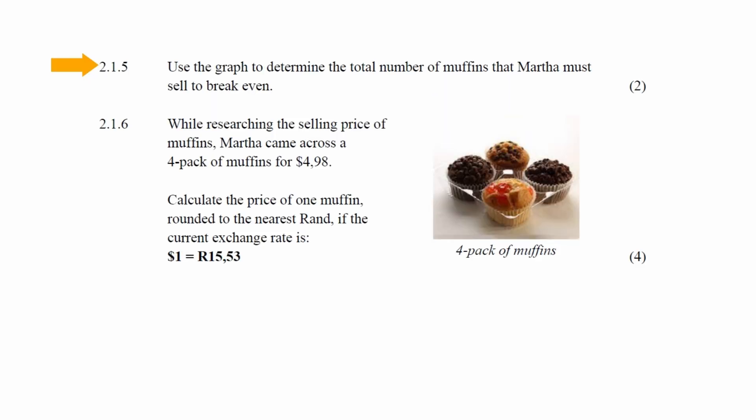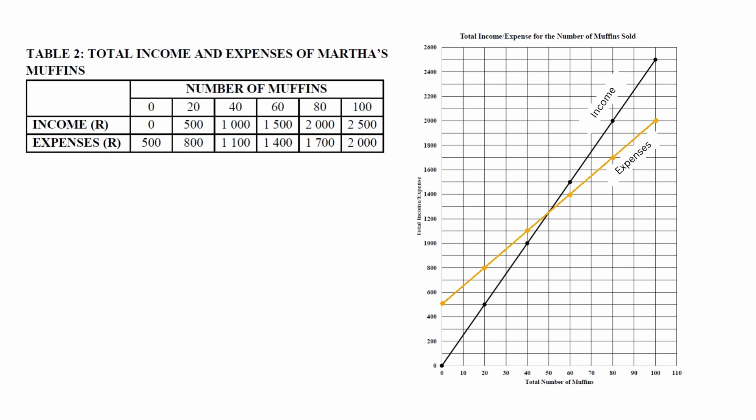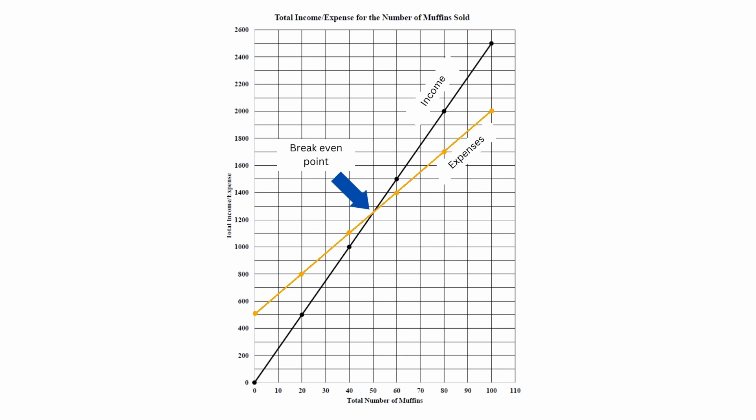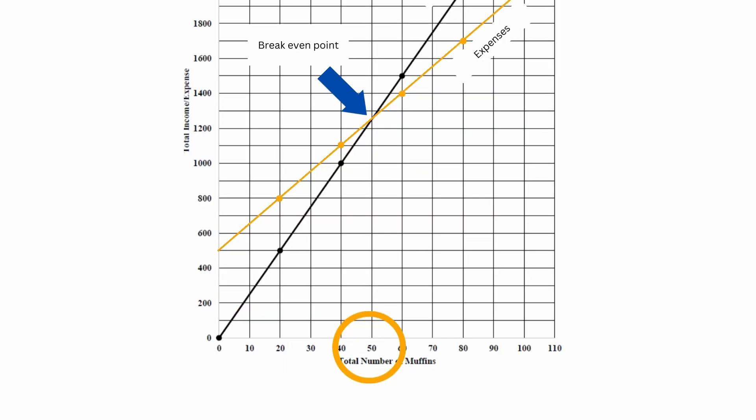In Question 2.1.5, you are instructed to use the graph to determine the total number of muffins that Martha must sell to break even. On the graph, the point of intersection of the two line graphs represents the break-even point — where income and expenses are equal for a particular number of muffins produced and sold. At the break-even point, we see that the number of muffins that must be sold to reach this point is 50 muffins.